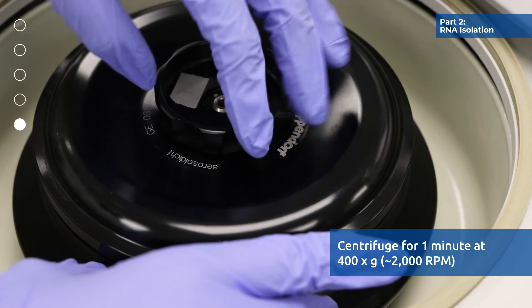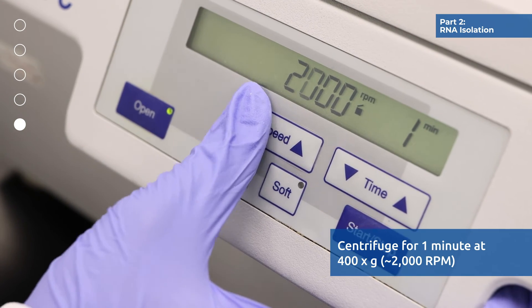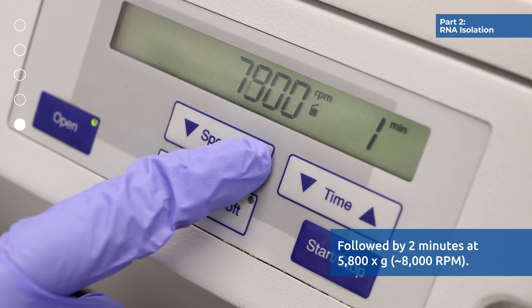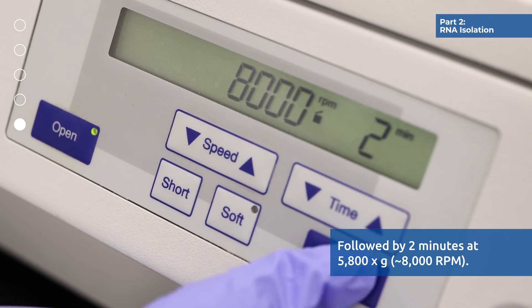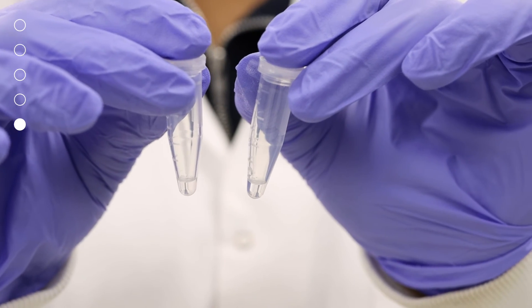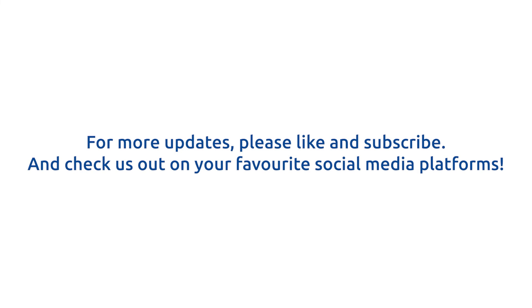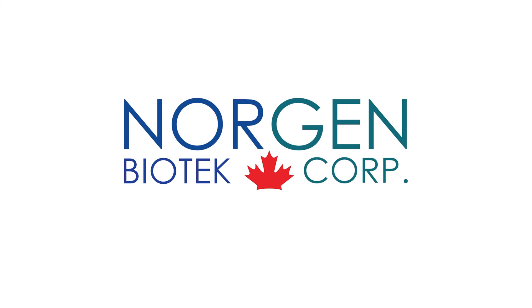Centrifuge for 1 minute at 400 g or 2000 rpm. Exosomal RNA is now ready for downstream applications. Thank you for watching this tutorial. If you enjoyed this video, please like and subscribe. And remember to follow us on all of your favorite social media platforms. See you next time at the bench.